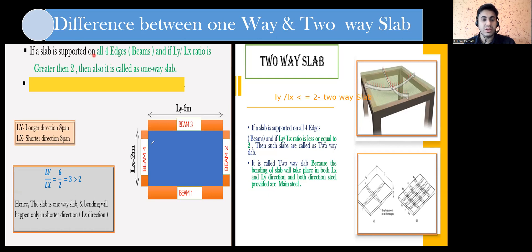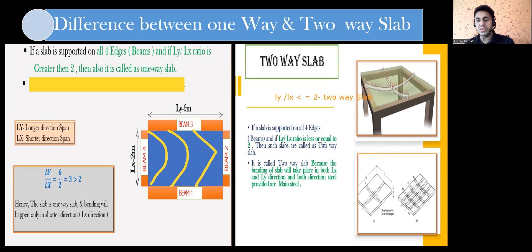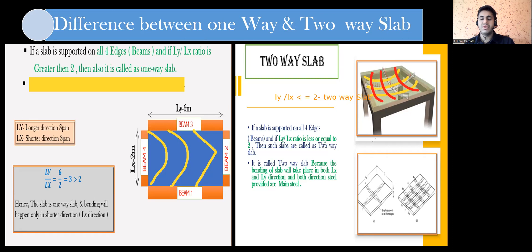To illustrate: this one-way slab has a shorter span of 2 meters and a longer span of 6 meters — bending happens only along the shorter 2-meter direction. For the two-way slab, bending happens in both directions — along the shorter span and also along the longer span. That is the basic difference between one-way and two-way slabs. The interviewer may then link a follow-up question based on this explanation.